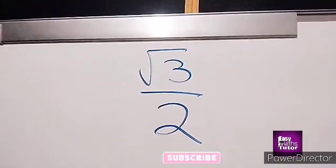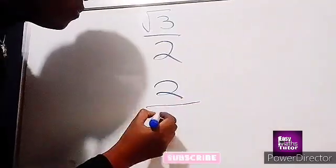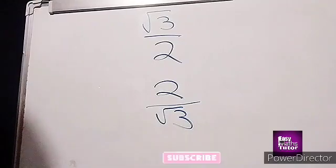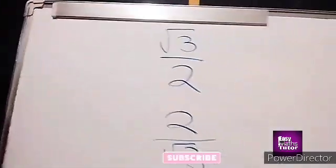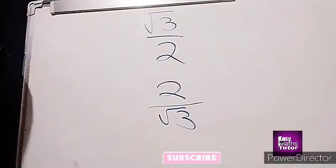But when you see surds looking like this, over root 3, then they can be simplified further. When you see surds written in the denominator like this, then they can be simplified further. How do we do this?